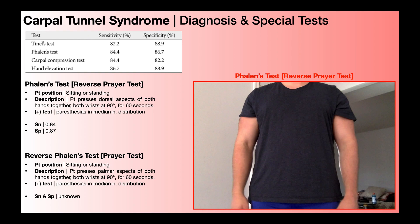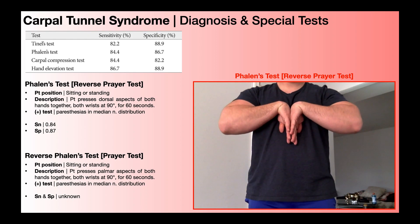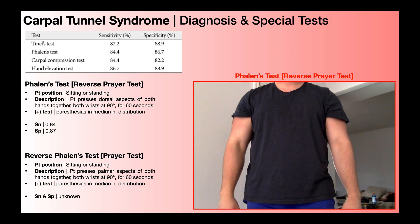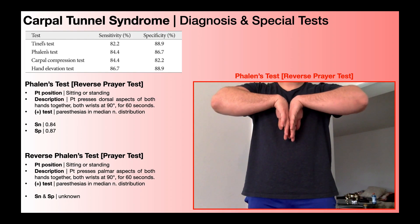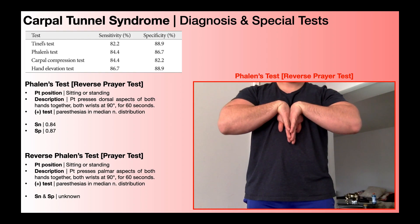For the Phalen's test, the patient is sitting or standing and presses the dorsal aspects of both hands together, both wrists at 90 degrees, and holds for 60 seconds — basically an upside-down or reverse prayer position. A positive test is reproduction of paresthesias in the median nerve distribution. The sensitivity of this test is 84% and the specificity is 87%.